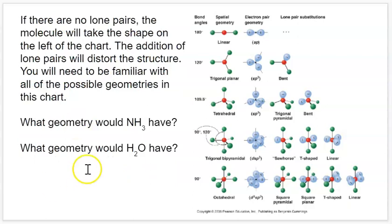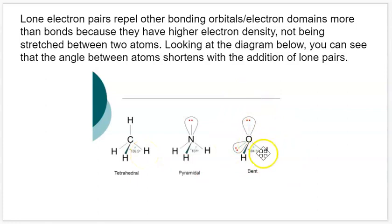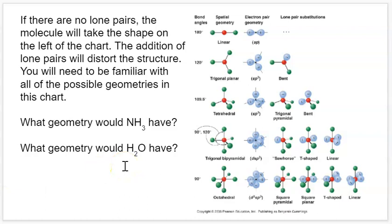As a quick practice: NH3 looks like three bonds and three domains, but drawing the Lewis structure shows nitrogen has a lone pair, giving four domains — so it's SP3 hybridized and has a trigonal pyramidal geometry. Water is H2O with two bonds, but the central oxygen also has two lone pairs, giving four domains — so oxygen is also SP3 hybridized with a bent geometry. That's all for this lecture. I'll see you in unit three.